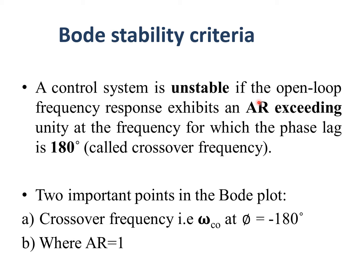Someone was asking yesterday about a system oscillating and becoming unstable. If we are at a crossover frequency of 180 degrees, meaning the phase lag is already 180 degrees, and if the amplitude ratio exceeds one, then it will become unstable — the amplitude will increase further and further. But if the amplitude ratio is less than one, the oscillations will start to be damped and we won't get overlapping oscillations. If it's 180 degrees and the amplitude ratio starts to increase, the system will become unstable.